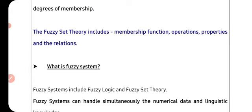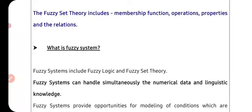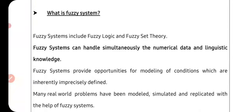Fuzzy set theory includes membership function, operations, properties, and relations — these are the components of fuzzy set theory. The next part of fuzzy logic is the fuzzy system.